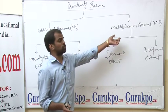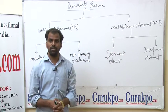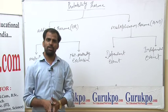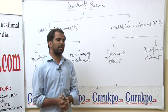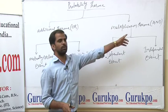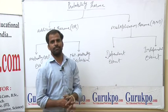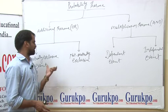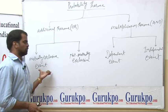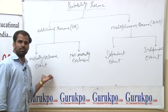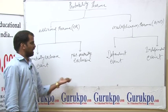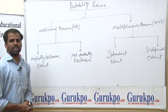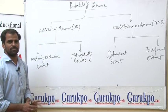Jabki jab dho ghatnayein saath mein ya eksat perform ho, tho 'AND' ka arthaat use karte hain. Additional theorem ke dho parts hain: mutual exclusive events and not mutual exclusive events.